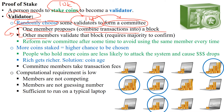The remaining 127 members will validate that block, meaning they try to confirm it. This requires a majority to confirm — for example, two-thirds of the committee members, which is 66%, need to confirm the block.